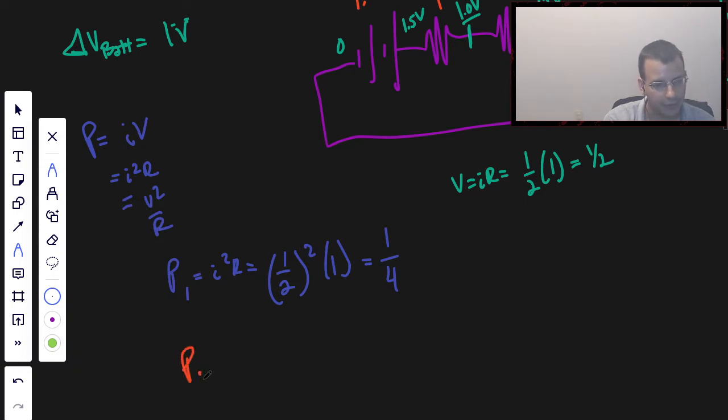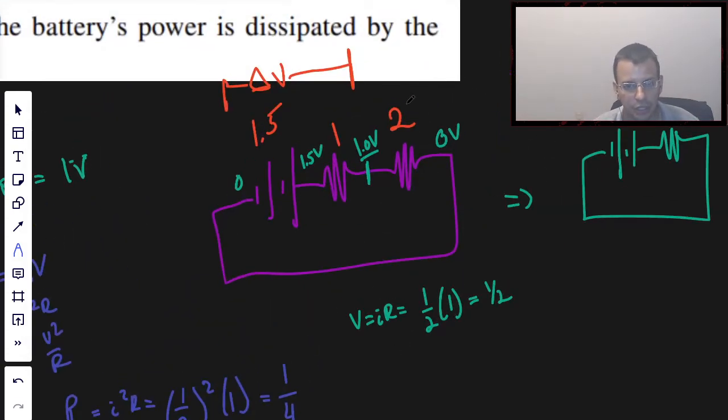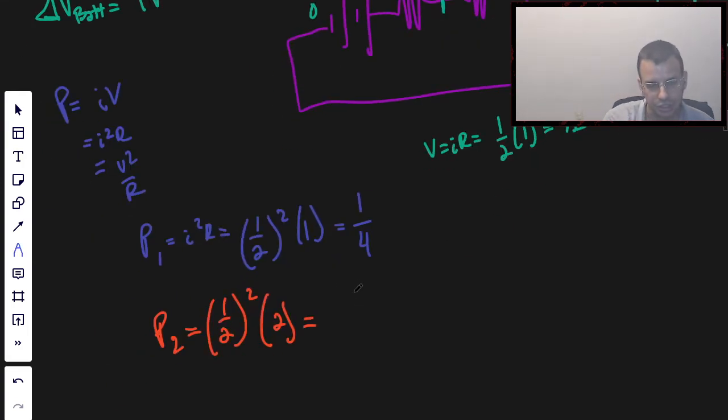And power for the second one, I squared R again. Since they are in series, they have the same current passing through them. But this time the resistance is 2, so this is 0.5 watts.